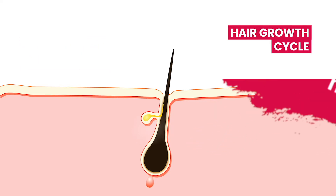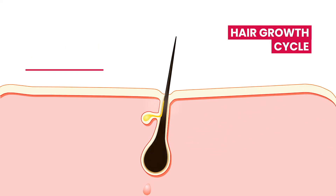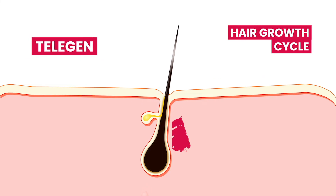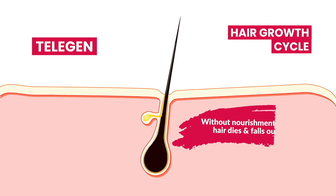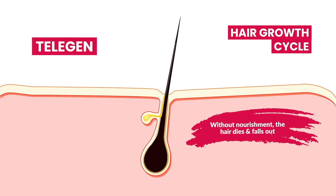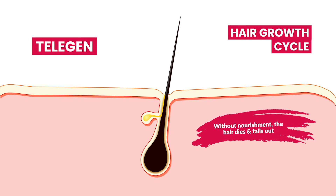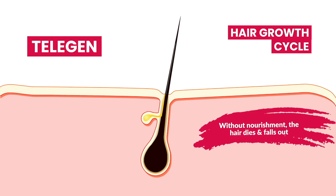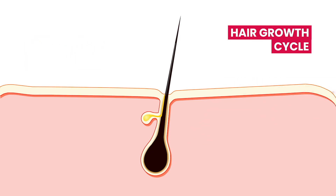Telogen is the final stage. This is the resting phase of the growth cycle — the dead hair lies in the follicle, waiting to fall out or for a new hair to push it out.